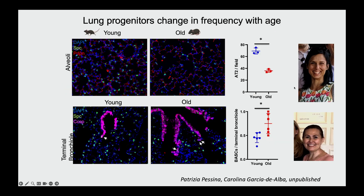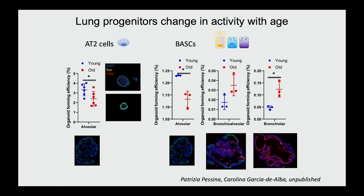Many years ago, Patricia Piscina and Carolina Garcia de Albus began to ask the basic question of what is different about aged lung stem cells. Through immunofluorescence comparing young versus old mice, they found a reduction in the abundance of alveolar type 2 cells in old mice. However, when they quantified the BASC population — that multipotent progenitor — there was an increased abundance of these cell types. Importantly, this is associated with functional changes: AT2 cells from old mice are less able to form organoids, and when you take the multipotent stem cell from old mice, they are less able to form alveolar cells but are actually better at making bronchiolar cells, which we thought was a really intriguing change.